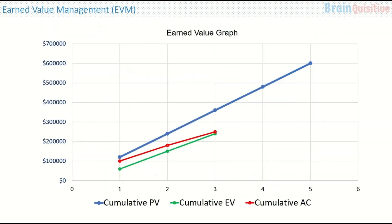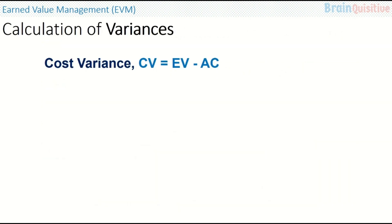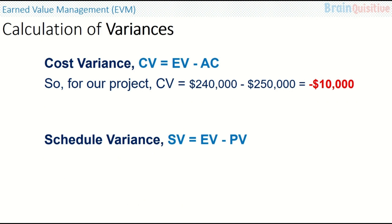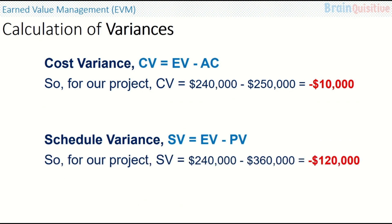This is the earned value graph of this sample project. The blue line is the cumulative planned value, the green line is the cumulative earned value, and the red line is the cumulative actual cost. The cost variance, or CV, equals earned value minus actual cost — so for our project, CV is minus 10,000 dollars. The schedule variance, or SV, equals EV minus PV — in this case, SV is minus 120,000 dollars.